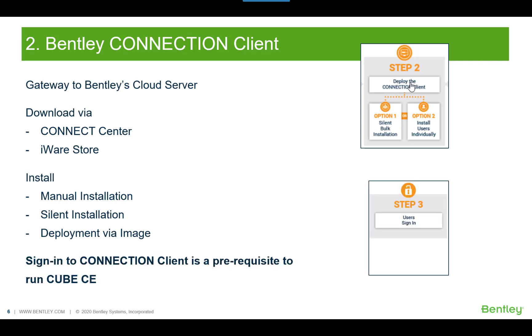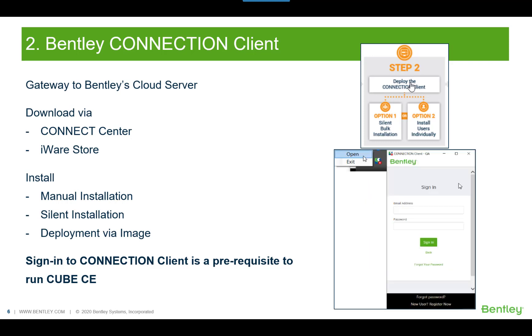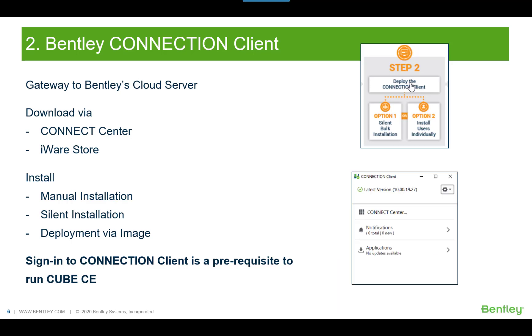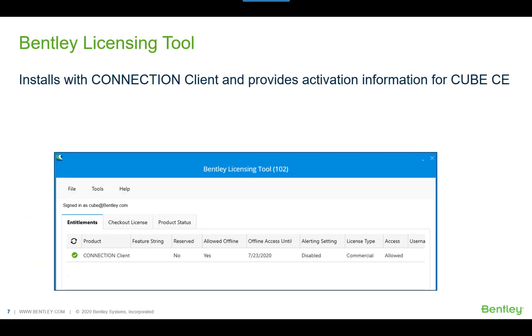The next step is to sign in to the Connection Client, as this is a prerequisite to run Cube Connect Edition. When the Connection Client is installed, it will be available in your system tray or as one of your applications. Open it and sign in with your Bentley login. With the Connection Client, you can access Connect Center directly, receive notifications, or receive updates to Cube Connect Edition applications. Installing the Connection Client also installs the Bentley Licensing Tool, which gives you information on product status for any Bentley applications including Cube. When logged in, you can see your login information in the top left.